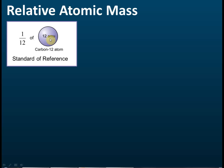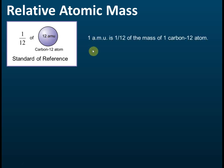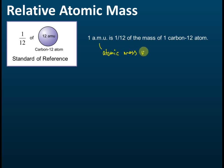So 1 amu is equal to 1/12 of the mass of one carbon-12 atom.